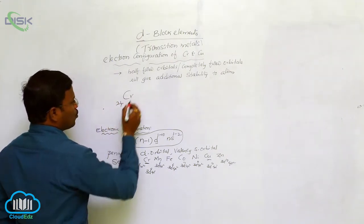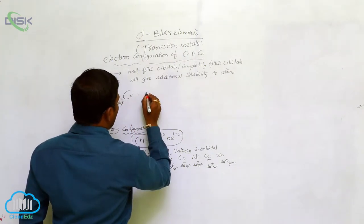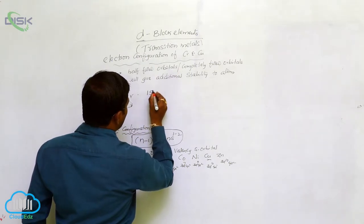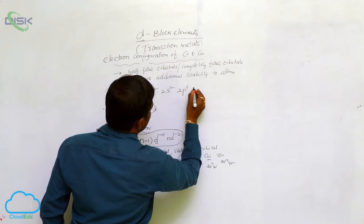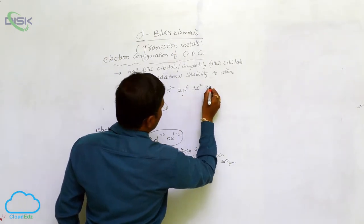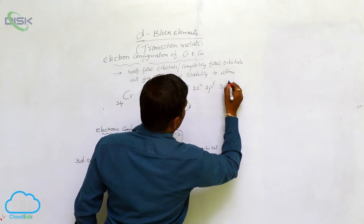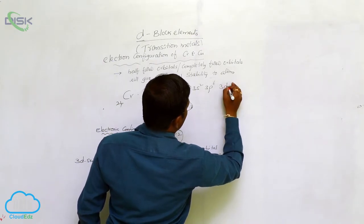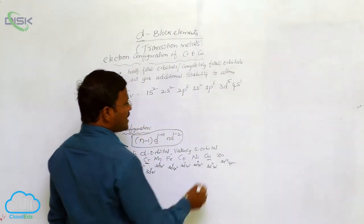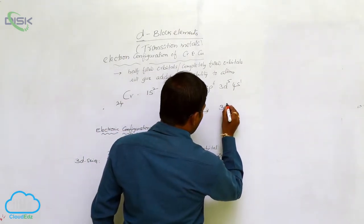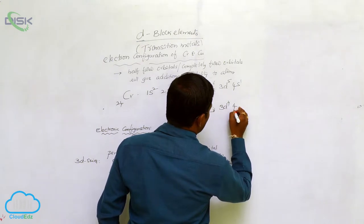The atomic number of chromium is 24. We can write the complete electron configuration as 1s2, 2s2, 2p6, 3s2, 3p6, 3d5, 4s1. But what is the expected valency shell electron configuration of chromium? It is 3d4, 4s2.